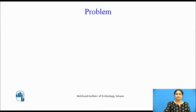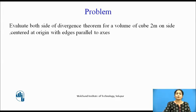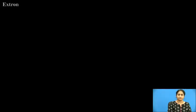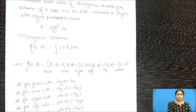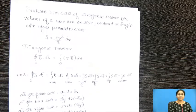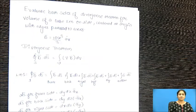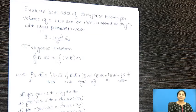Now let us take a problem. The problem statement is: evaluate both sides of the Divergence Theorem for a volume of a cube. The cube has sides of 2 meters, centered at the origin with edges parallel to the axes. We will evaluate both sides of the Divergence Theorem. The vector D-bar is given as 10x³/3 · ax-bar.